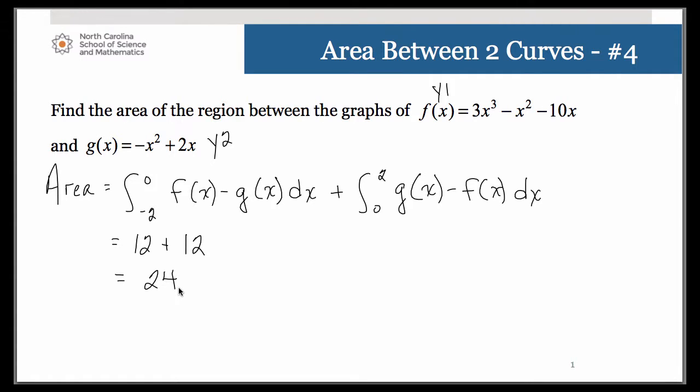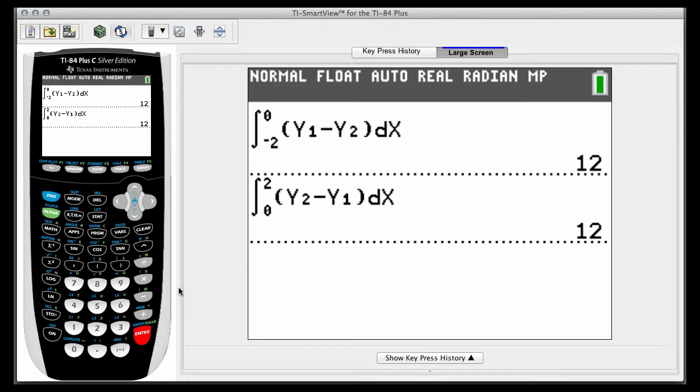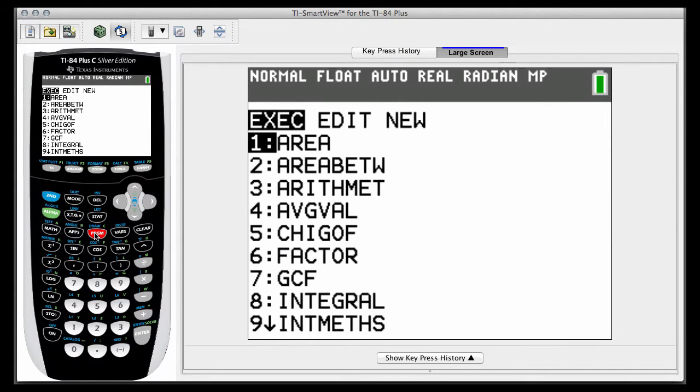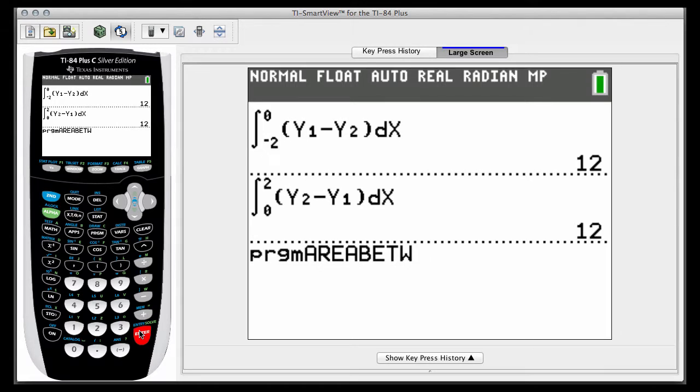Now let me show you something with that area between program though, because we've been talking about how we could use that to check our answers. So let's go back. Let's go ahead and run the program. And what a lot of people would try to do is they would think, okay well I'm just going to run it from negative 2 to positive 2 and just find the whole area in one lump sum.